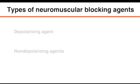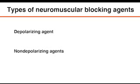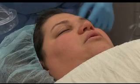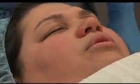There are two types of neuromuscular blocking agents: depolarizing and non-depolarizing, classified according to their mechanism of action. Soxynalcholine is the only depolarizing neuromuscular blocking agent currently in use. It mimics the action of acetylcholine at the nicotinic receptor, producing sustained depolarization of the muscle endplate, which causes fasciculations and subsequent flaccid paralysis.